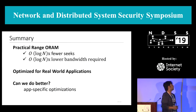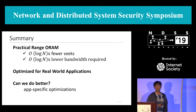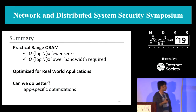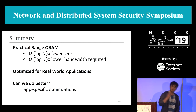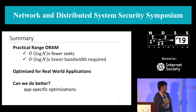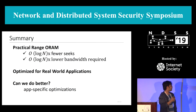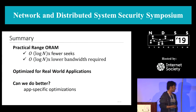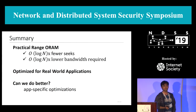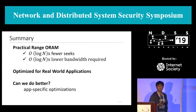To summarize, ROAM is a practical range ORAM construction. It requires O(log n) times fewer seeks and O(log n) times lower bandwidth compared to previous range ORAM constructions. Importantly, ROAM is a de-amortized construction while previous constructions are amortized. We have optimized ROAM for real-world applications including file systems, and the paper discusses several additional application-specific optimizations that reduce seeks even further.